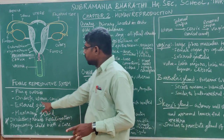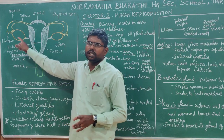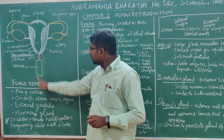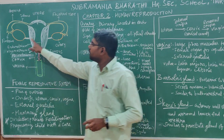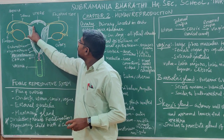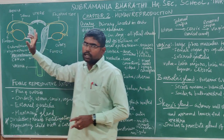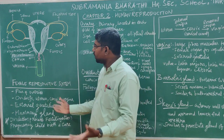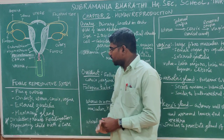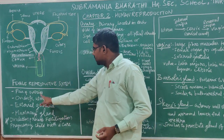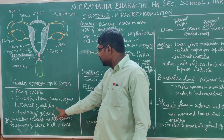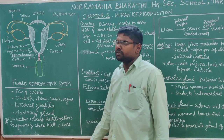The oviducts are the ducts which receive the egg released by the ovary. The duct that receives the egg is called the fallopian tube — on the right side and the left side. The next duct is called the uterus. After that there is the cervix, and then the vagina.